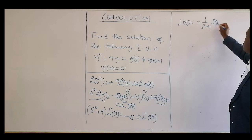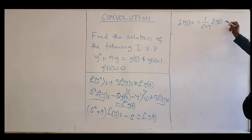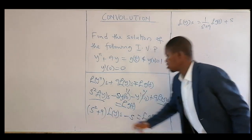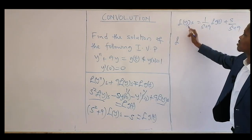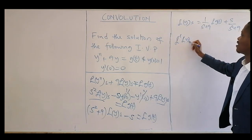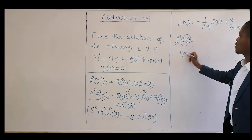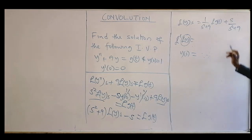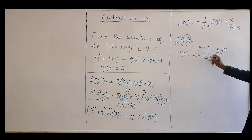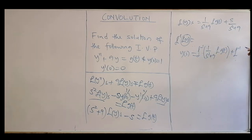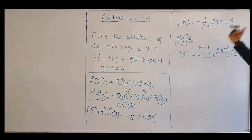Moving terms to the other side, we get Laplace of y equals [1/(s² + 9)] times Laplace of g(t), plus s/(s² + 9). Since we are looking for the solution y(t), we take the inverse Laplace of both sides. The inverse Laplace of a sum of functions equals the inverse Laplace of each of those functions separately.